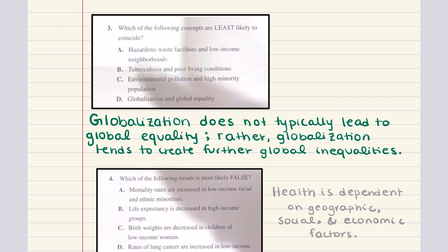Answer C says tuberculosis and poor living conditions — these are likely to coincide, as low income neighborhoods and poor living conditions do result in increased spread of illnesses and diseases. Answer C also mentions environmental pollution and high minority populations. Minorities and disadvantaged groups do sometimes tend to live in low income neighborhoods, which tend to be hot spots for plants and factories that cause a lot of pollution. So environmental pollution and high minority populations can coincide.